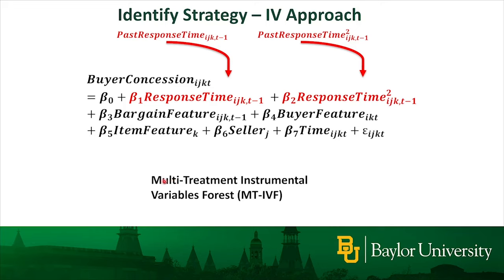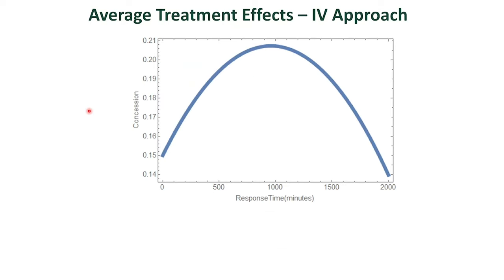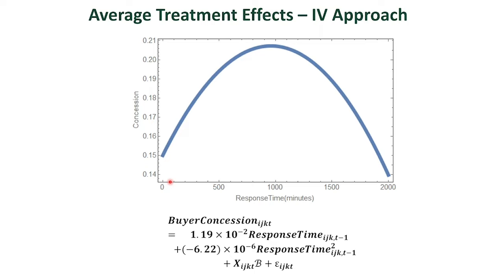The results from the average treatment effect show that both the linear term and the quadratic term are significant at the 5% significance level, indicating that the response time effect is indeed non-linear. Here we plot out the effects — on the X-axis is the seller's response time, and on the Y-axis is the buyer's concession. As we can see, as the seller delays in responding, the buyer's concession increases until reaching a tipping point, after which further delay decreases the buyer's concession. Based on that, we are able to compute the best response time, which is 16.8 hours.